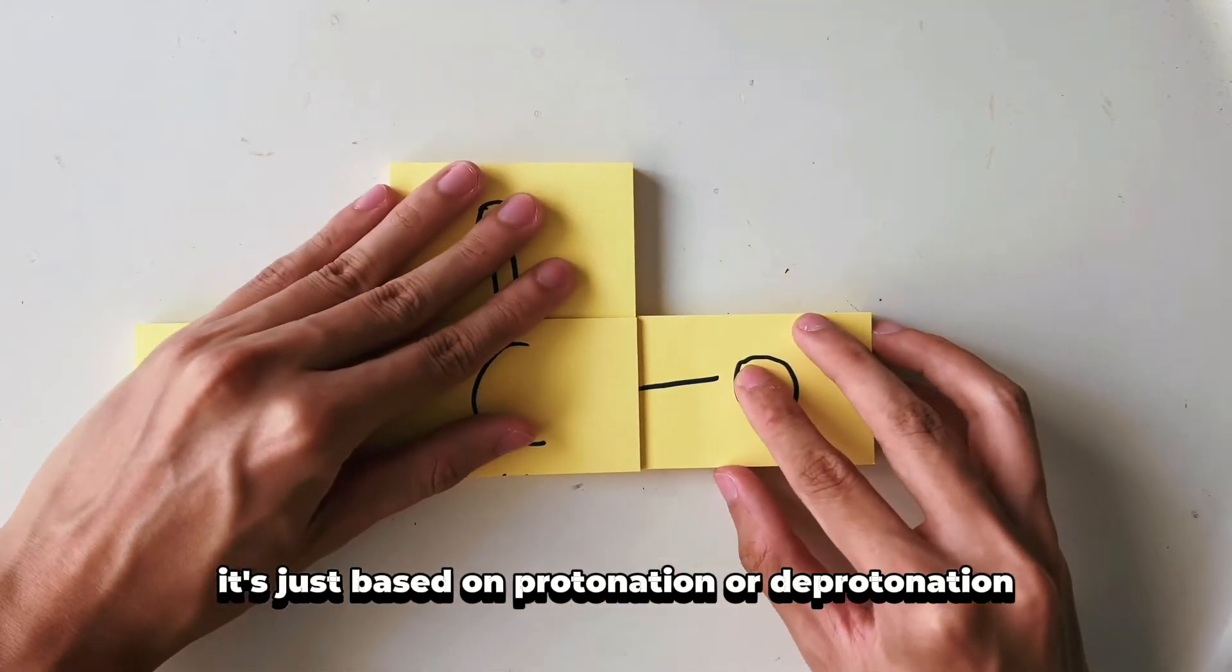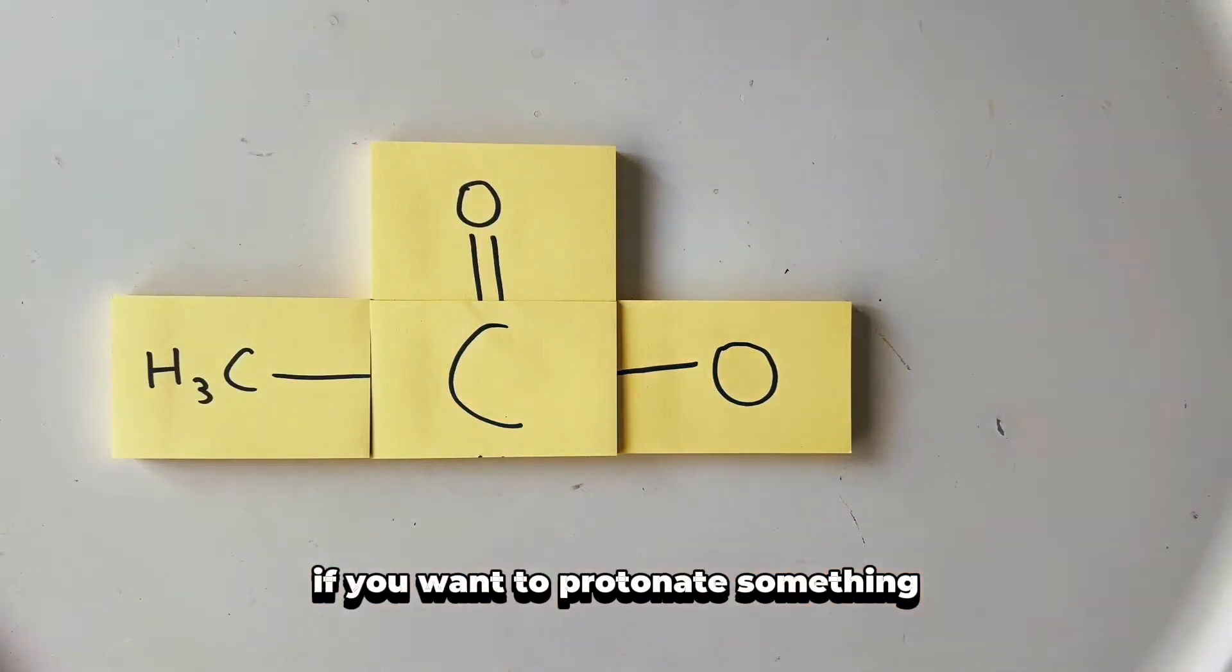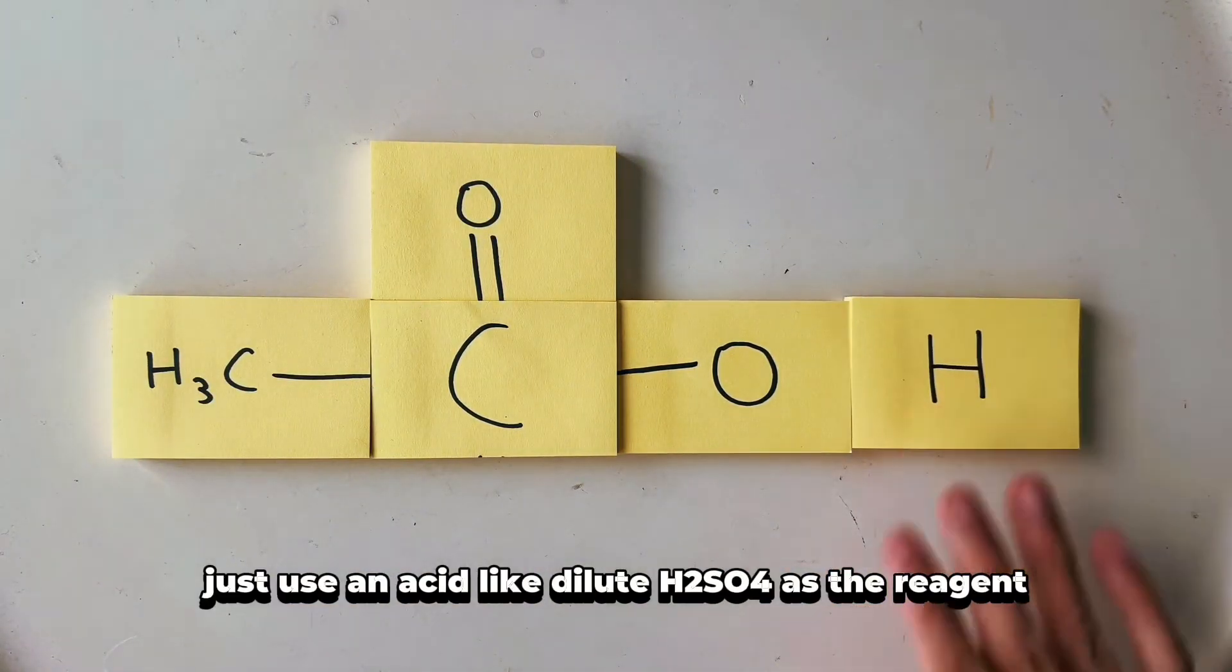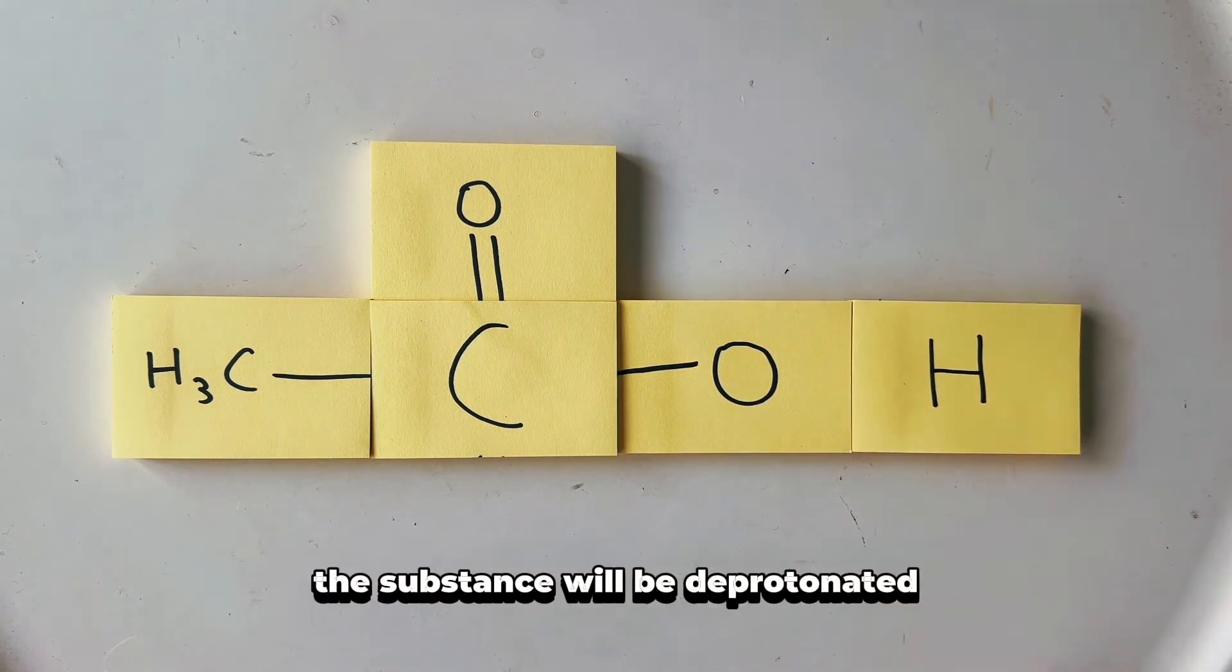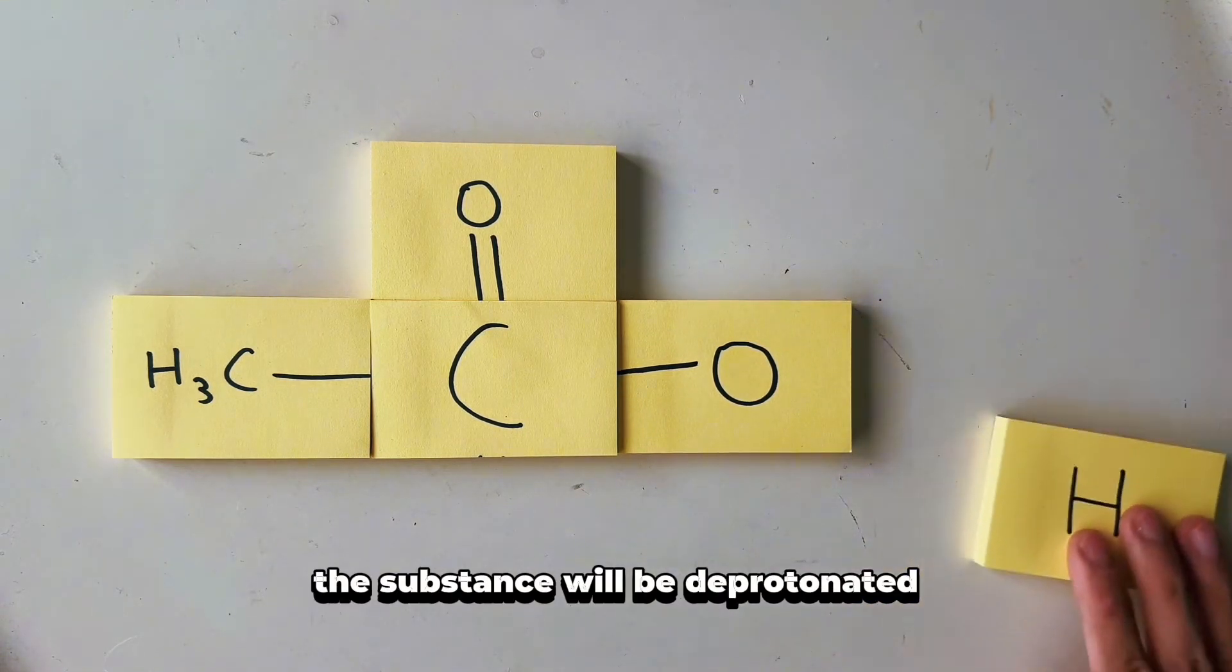For our 11th and final principle, acid-base is actually pretty simple. It's just based on protonation or deprotonation. If you want to protonate something, just use an acid like H2SO4 as the reagent. If you want to react a substance with a base such as NaOH, the substance will be deprotonated.